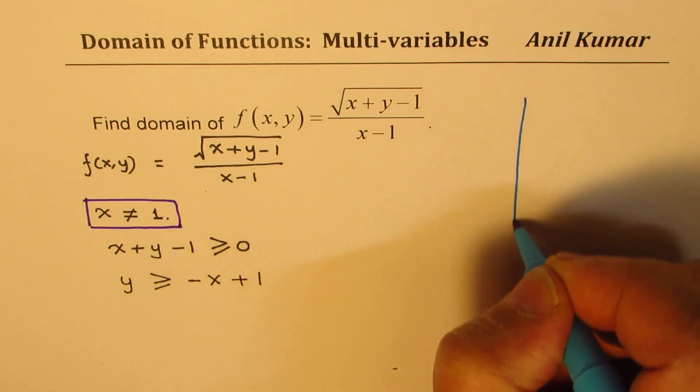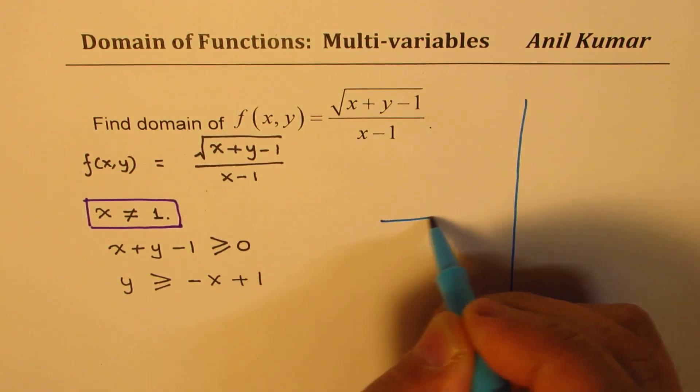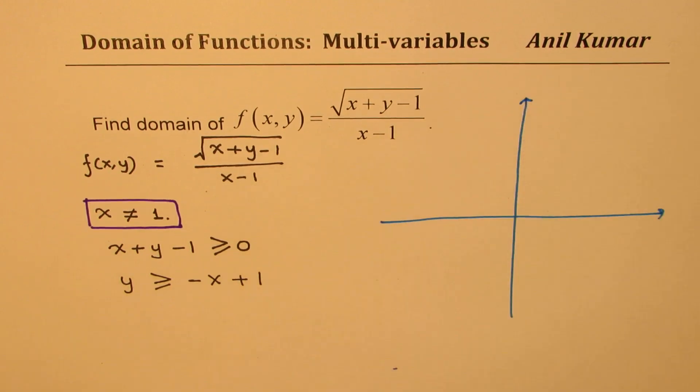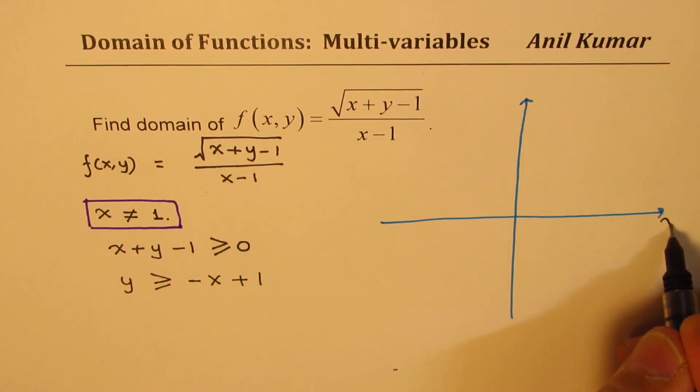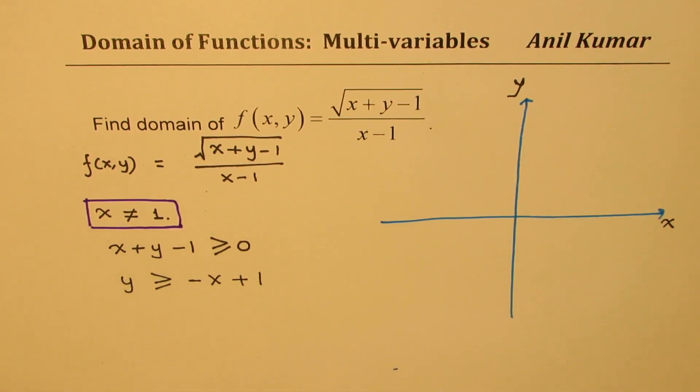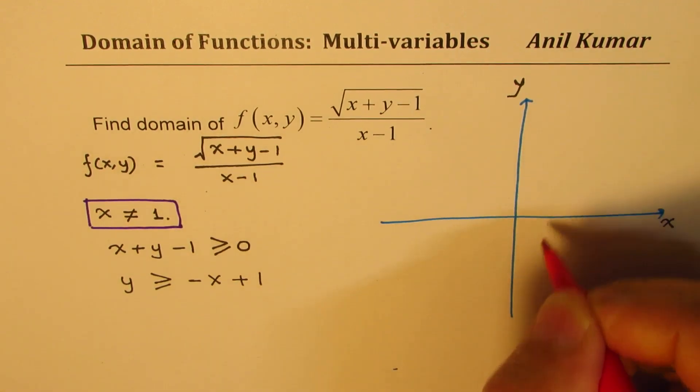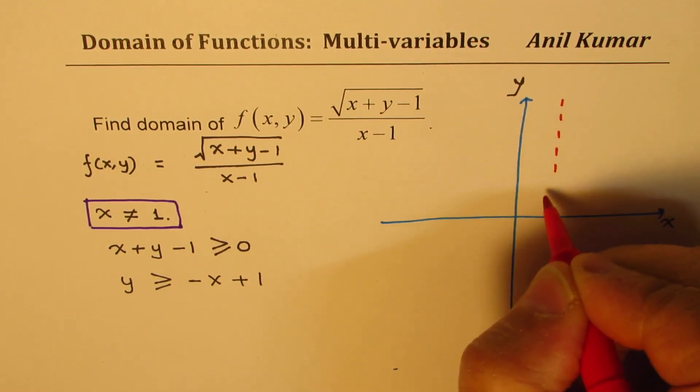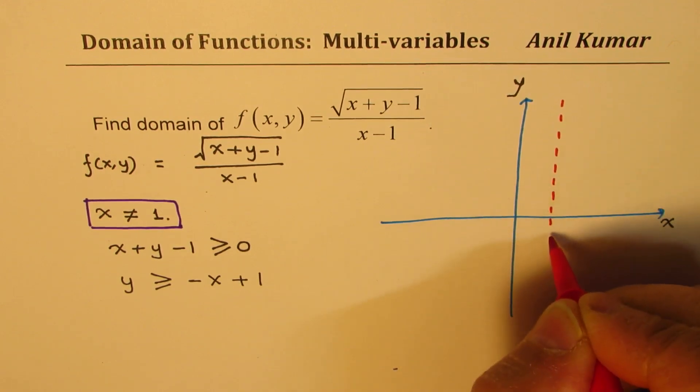So let us try to understand the situation, sketch it on a graph. So let's take the x, y plane. So here, let's say that is x-axis, this is y-axis. One of the restriction is that it cannot have the value of x as 1. So let's say this is 1 for us.